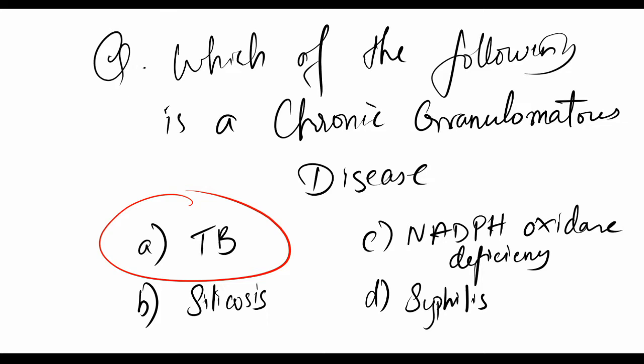Though TB is a chronic disease and has granulomatous lesions, TB is not a chronic granulomatous disease. TB is what we call a chronic inflammation.